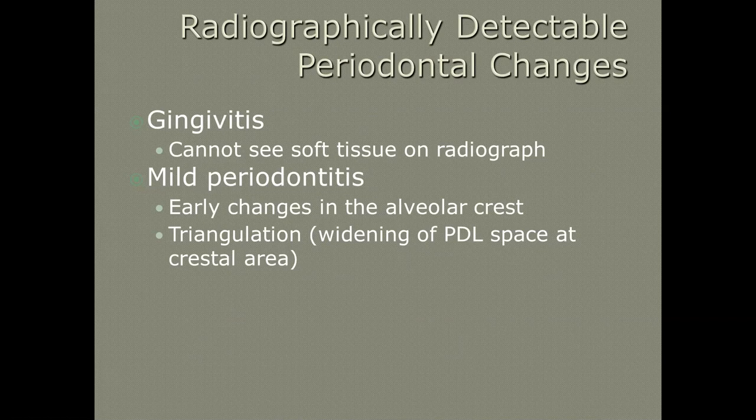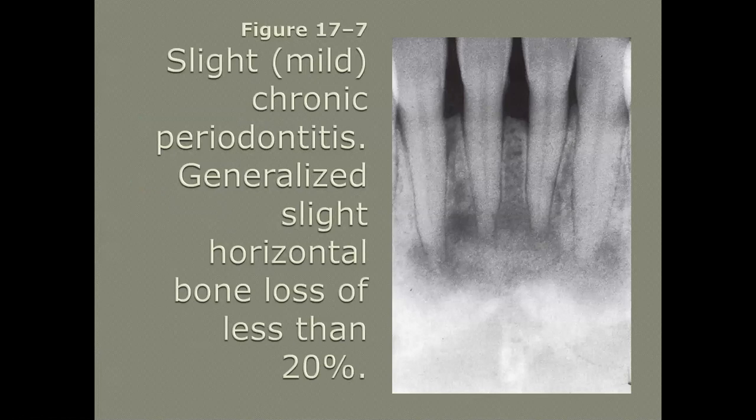We can't see gingivitis or soft tissues on the radiograph — sometimes we can see mild changes after they've been established. You also need to know the word 'triangulation,' which is the widening of the PDL space at the crestal area when bone loss is starting. Triangulation is most evident in the bifurcated or trifurcated areas of maxillary molars.